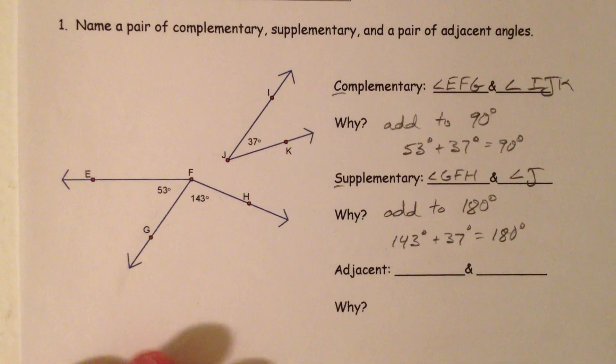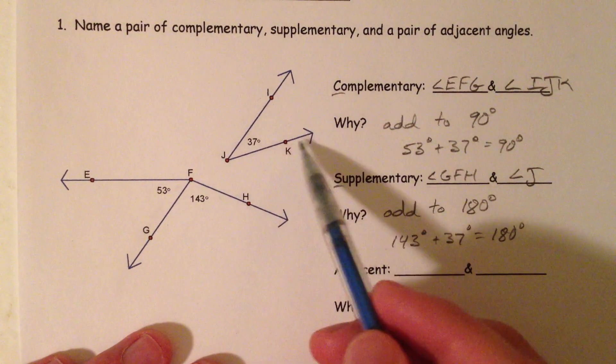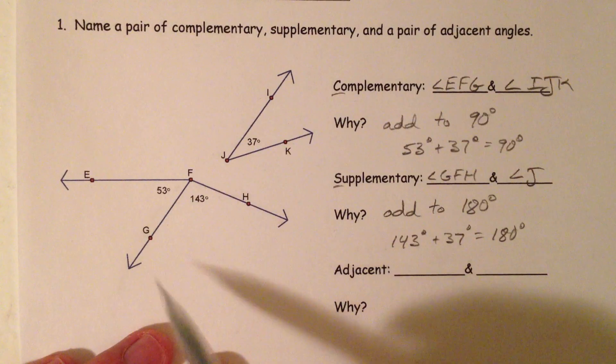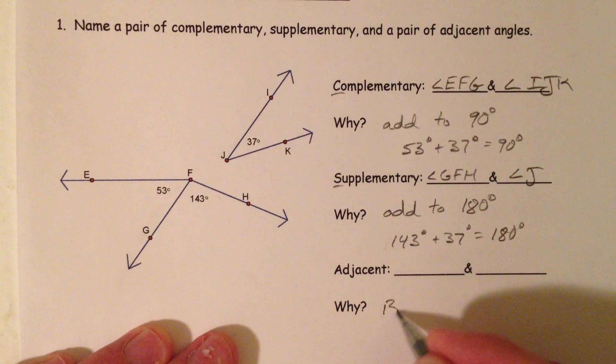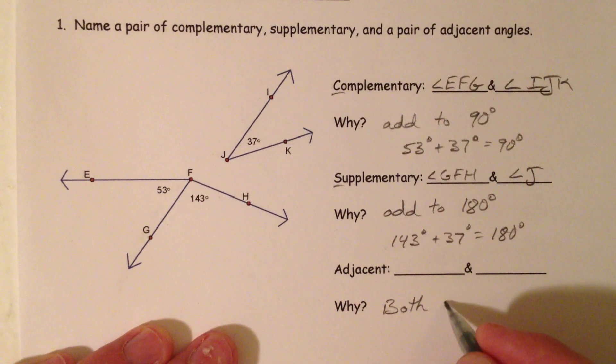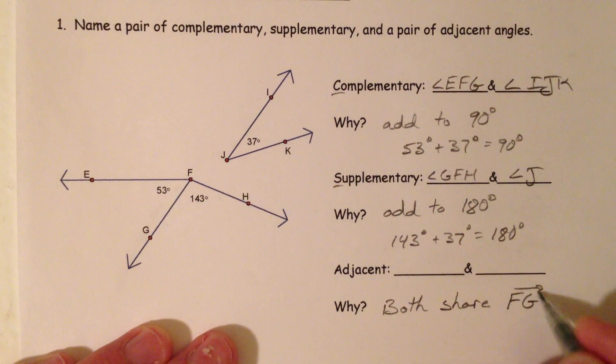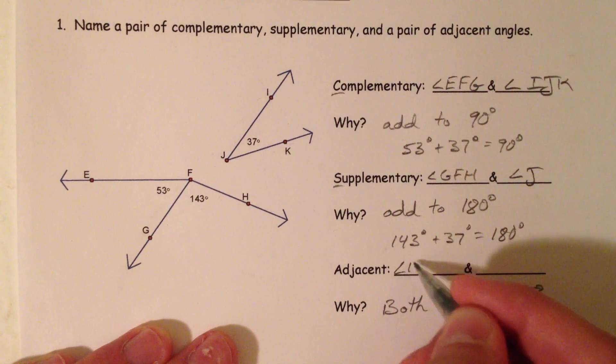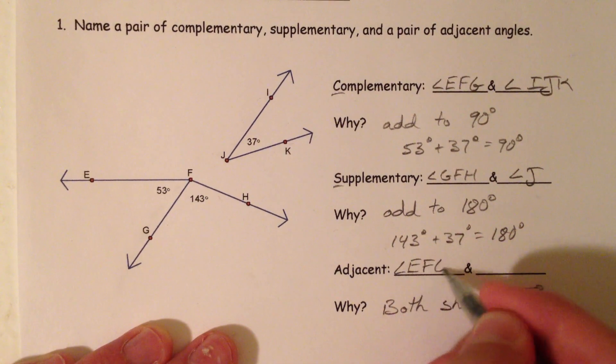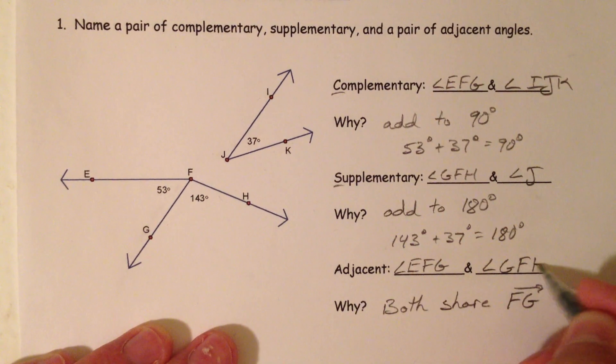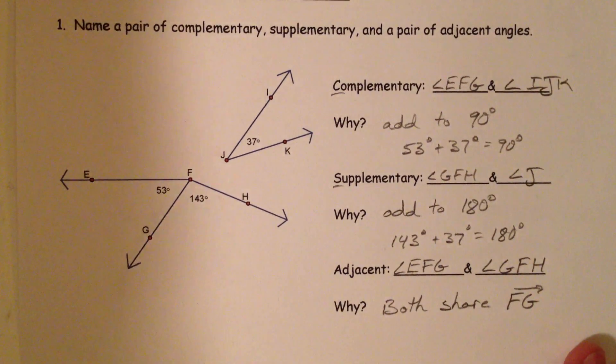Now, which ones are adjacent? Now this one is not adjacent to any of them, but these two angles share FG. And so both share FG as a ray. And so angle EFG and angle GFH. And there you have it.